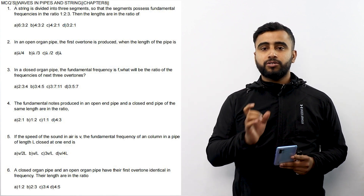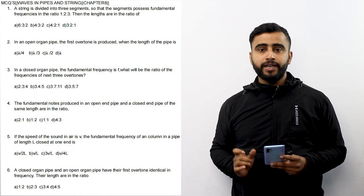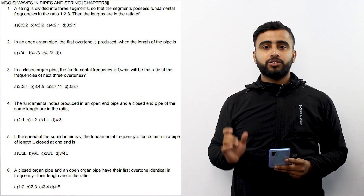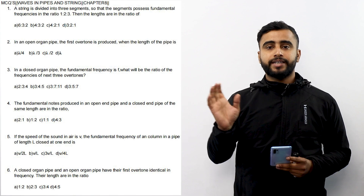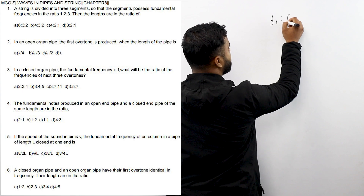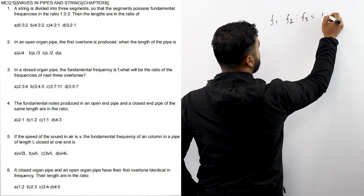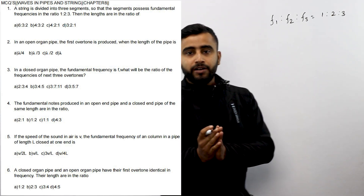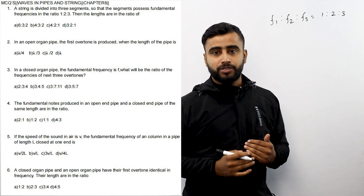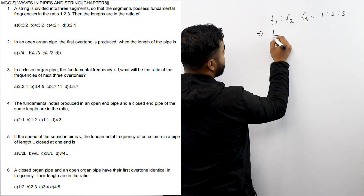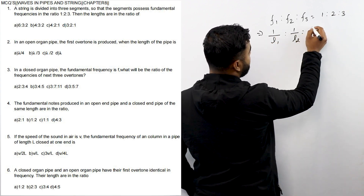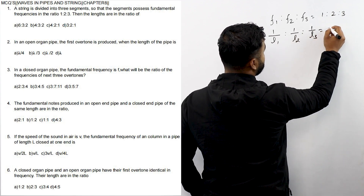The fundamental frequencies are in the ratio 1:2:3 and we need to find L1:L2:L3. Simply, fundamental frequency is inversely proportional to length. So F1 is inversely proportional to L1, F2 is inversely proportional to L2, and F3 is inversely proportional to L3.